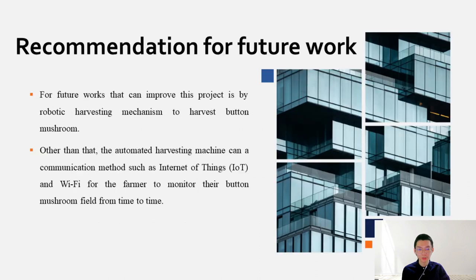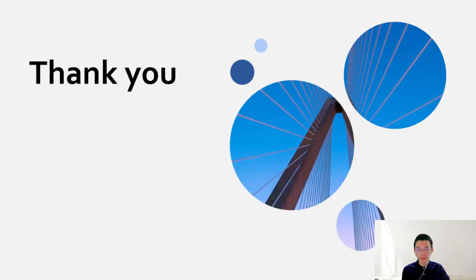Although button mushroom detection and measurement system is able to help farmers monitor the amount and size of button mushroom, the final solution to reduce time-consuming and human resources in harvesting is by creating an automated harvesting machine. The mushroom detection and measurement system in this project is one of the technological requirements to develop an automated harvesting machine. For future work, we can create robotic harvesting mechanism to harvest button mushroom. The automated harvesting machine can use communication methods such as Internet of Things and Wi-Fi for the farmer to monitor their button mushroom field from time to time. That's all from me. Thank you.